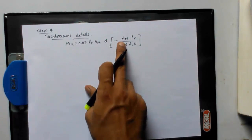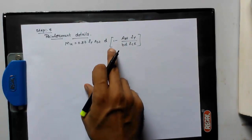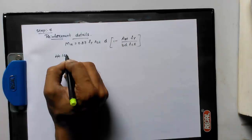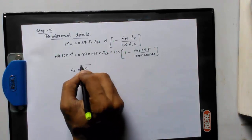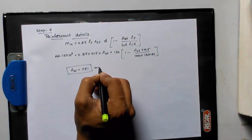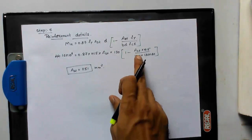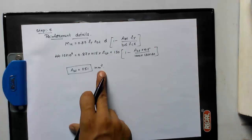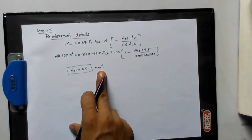This is the formula to find out what is the area of steel. Substitute all the values and find out what is the AST. So when you solve for AST, you will get the value of 1151 mm square.